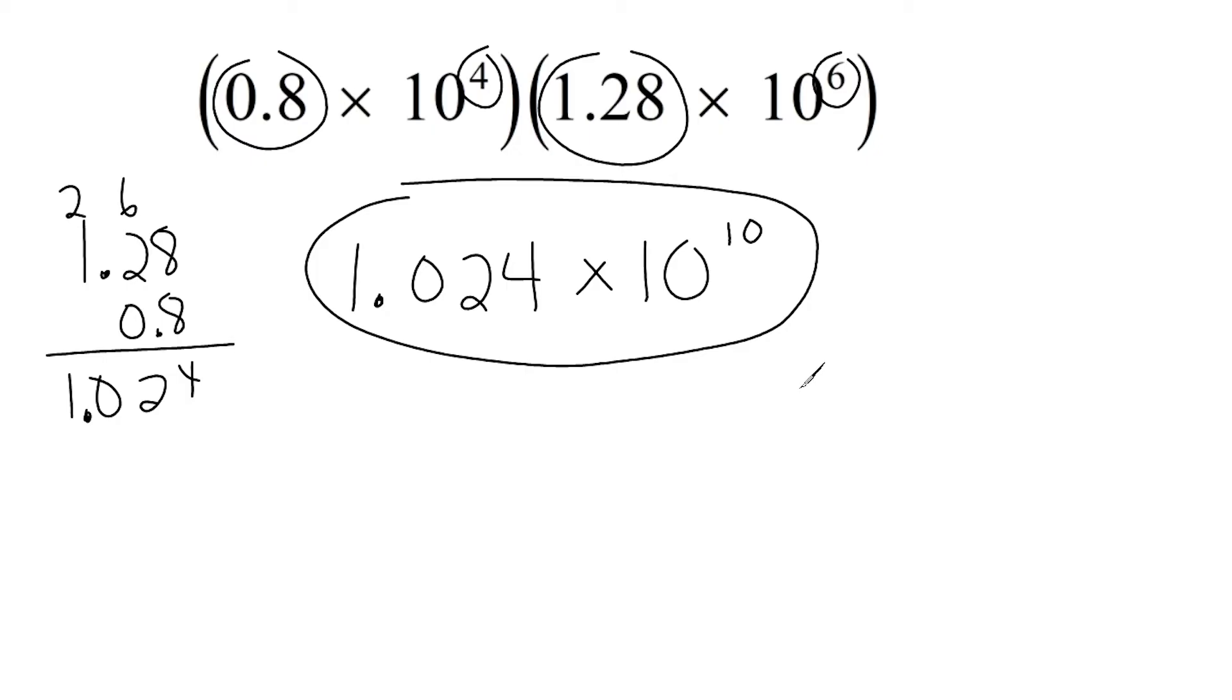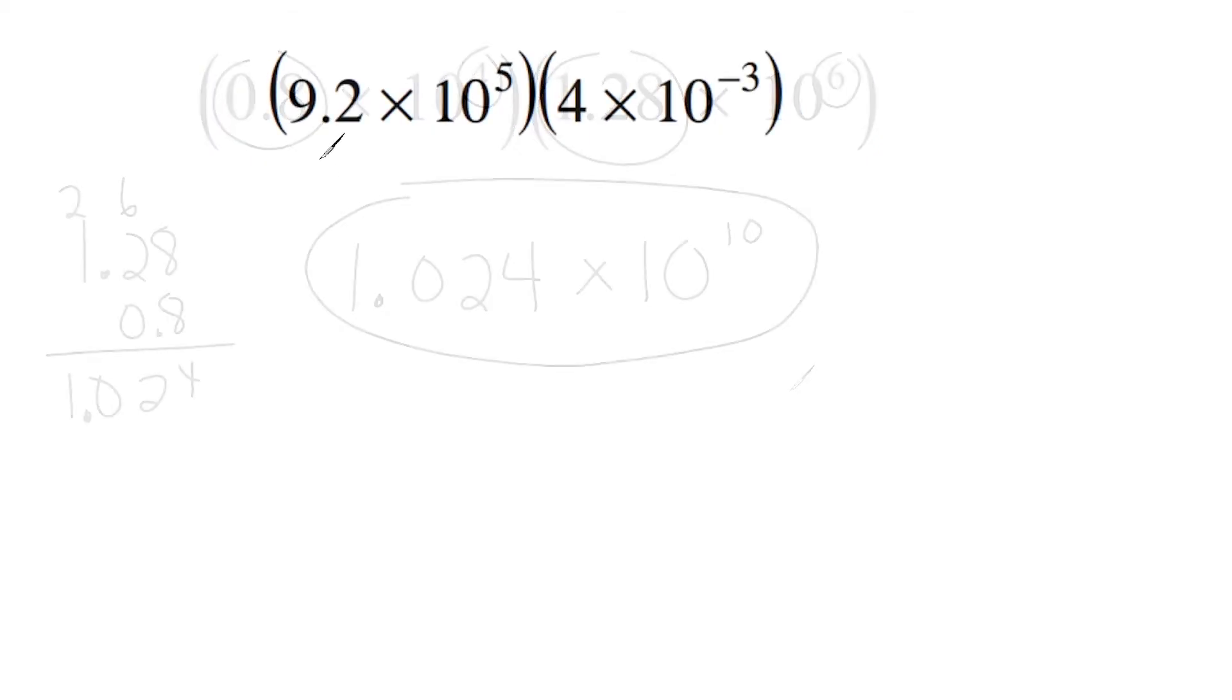All right, let's go ahead and do another example. Okay, so let's start by multiplying 9.2 times 4. That would give us 36.8. I just did a little bit of mental math there. And now I'm going to bring down our base of 10. But we have to be careful here.